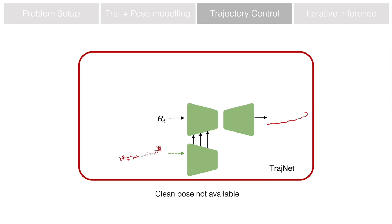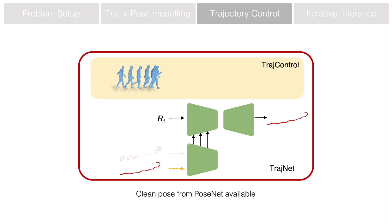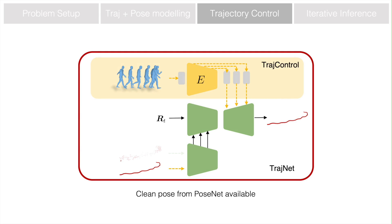In the trajectory net, as the clean pose is not available in the beginning, the trajectory is reconstructed conditioning only on the corrupted input. With the pose net, a cleaner version of the trajectory and local pose is obtained. The pose encoder E is copied from the original trajectory net encoder and fine-tuned with other parts frozen. Multi-level pose features are added to the trajectory net as additional control, improving the reconstructed motion quality in the global space.